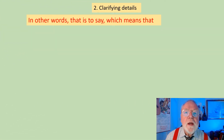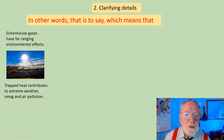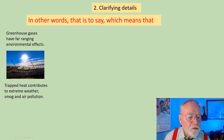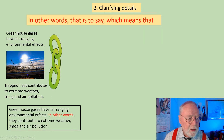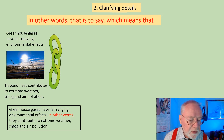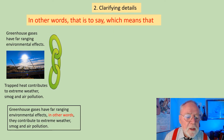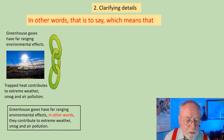For clarifying details or expanding the meaning in our sentences, we can use 'in other words,' 'that is to say,' and 'which means that.' Looking at these two sentences: 'Greenhouse gases have far-ranging environmental effects' and 'Trapped heat contributes to extreme weather, smog and air pollution.' Linked together: 'Greenhouse gases have far-ranging environmental effects. In other words, they contribute to extreme weather, smog and air pollution.' Notice the commas either side of the phrase. I've expanded the meaning of 'far-ranging environmental effects' and clarified the details.